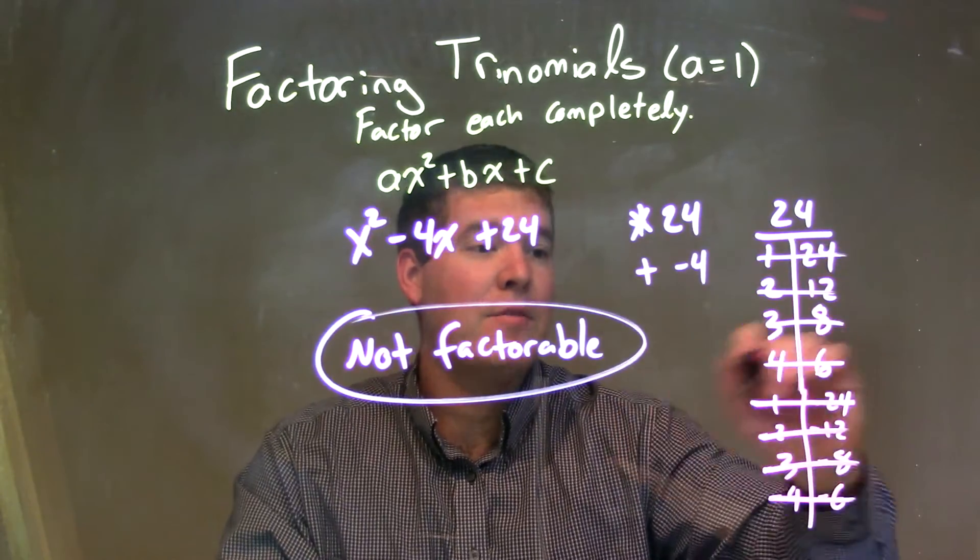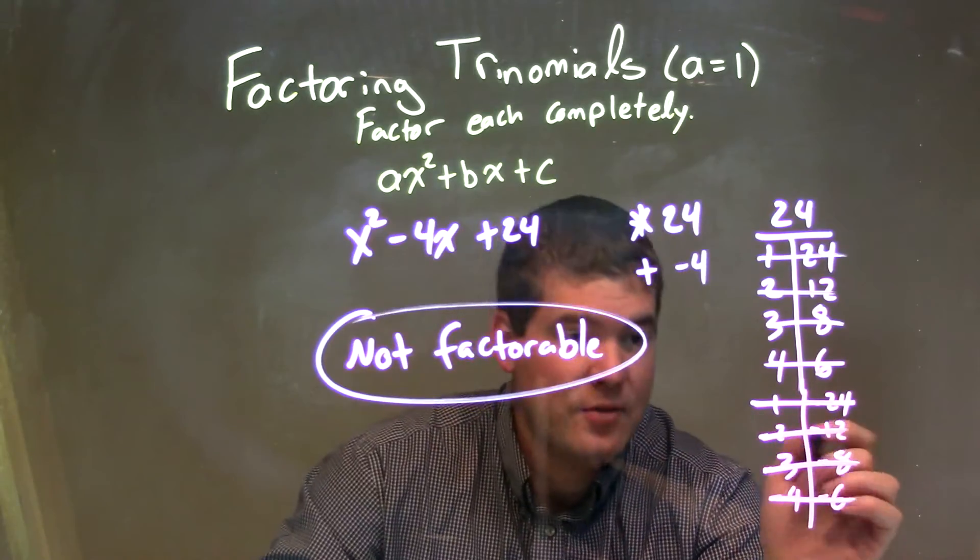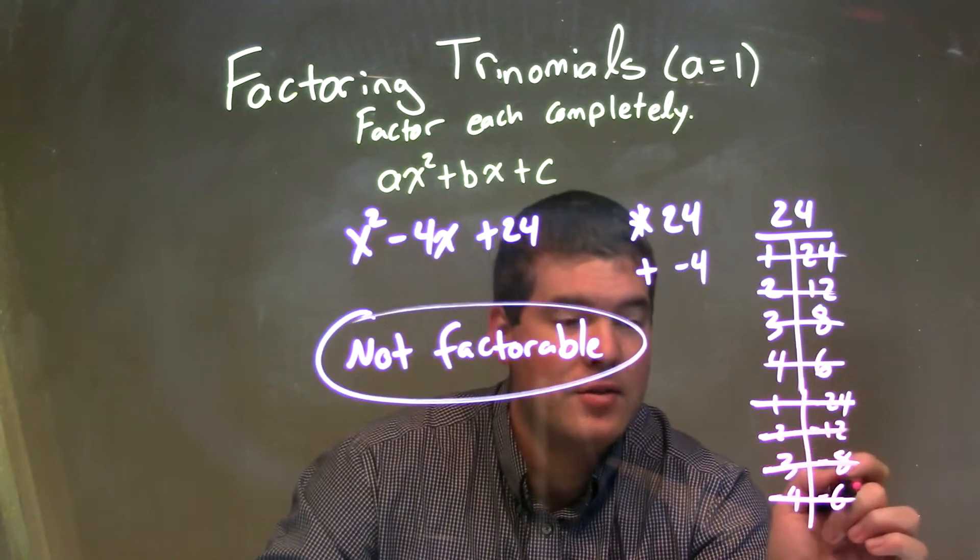So I listed all the numbers that multiply to be a positive 24. 1 and 24, 2 and 12, 3 and 8, 4 and 6. And the negatives. Negative 1, negative 24. Negative 2, negative 12. Negative 3, negative 8. Negative 4, negative 6.